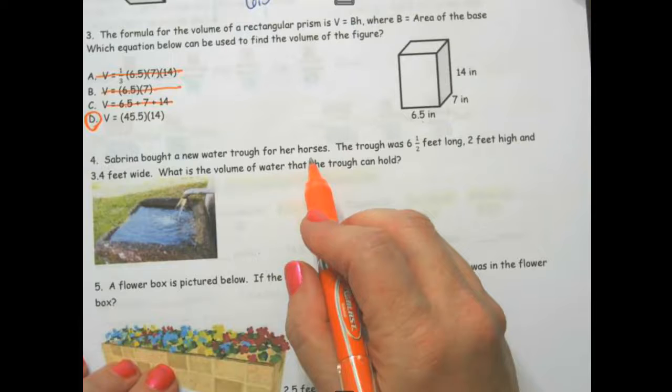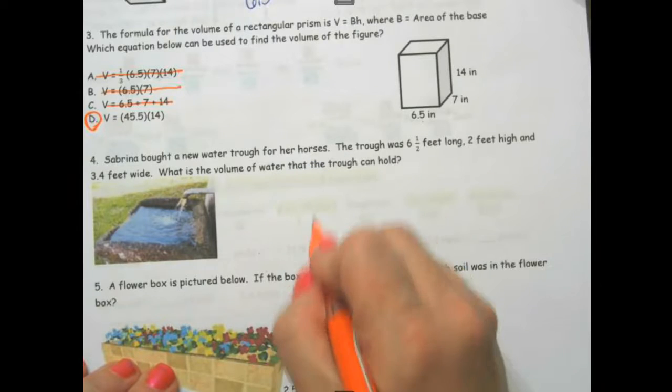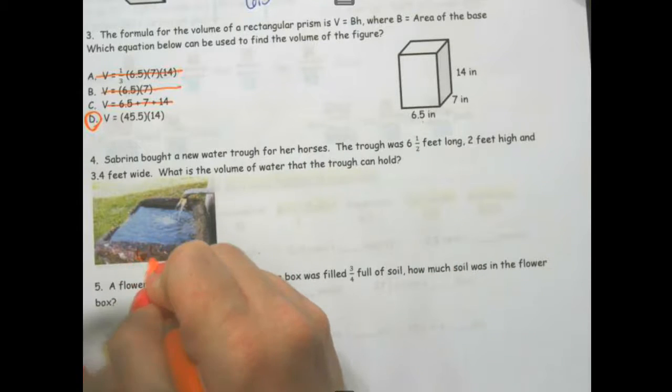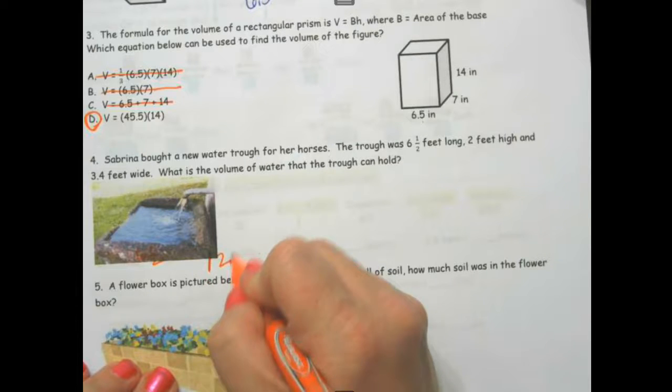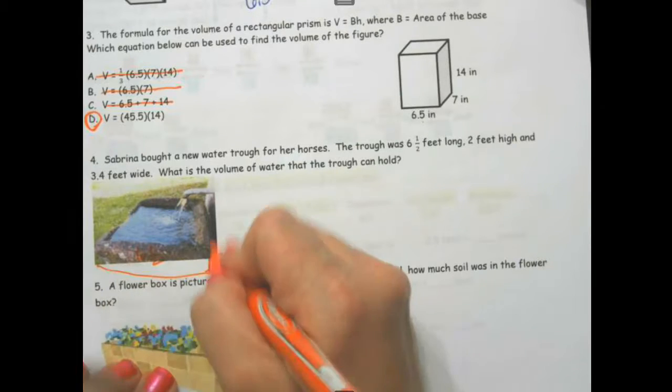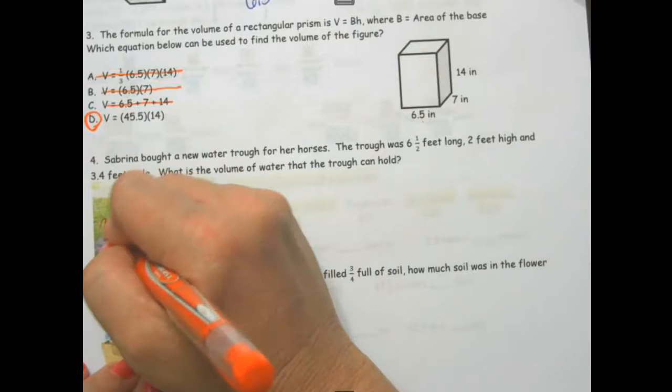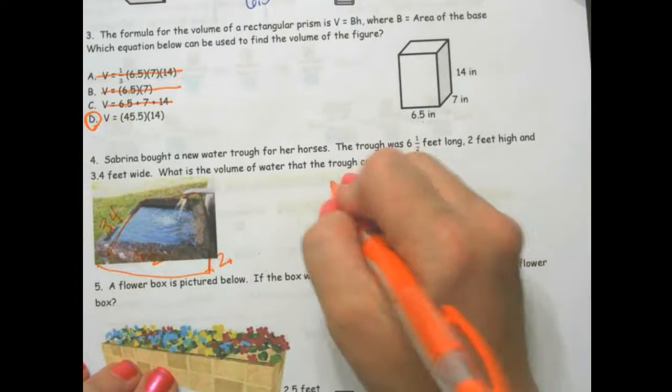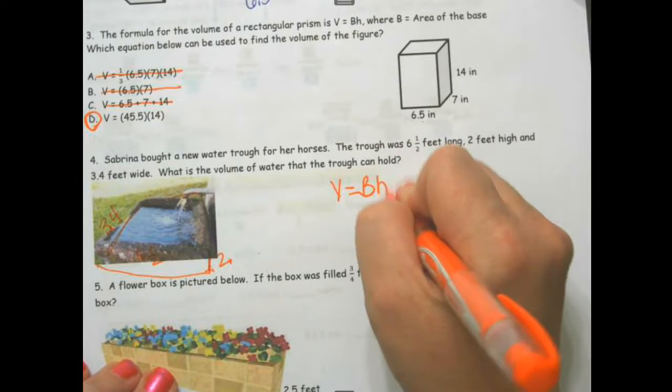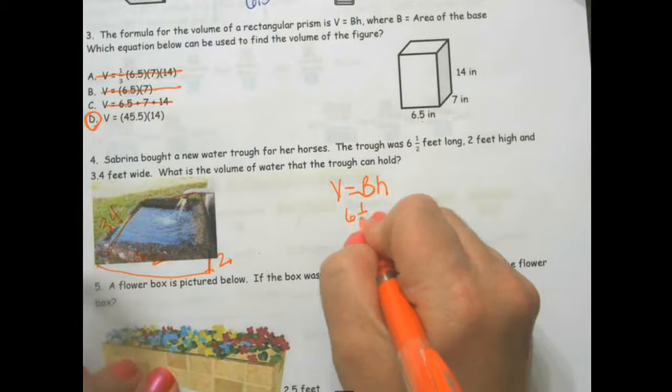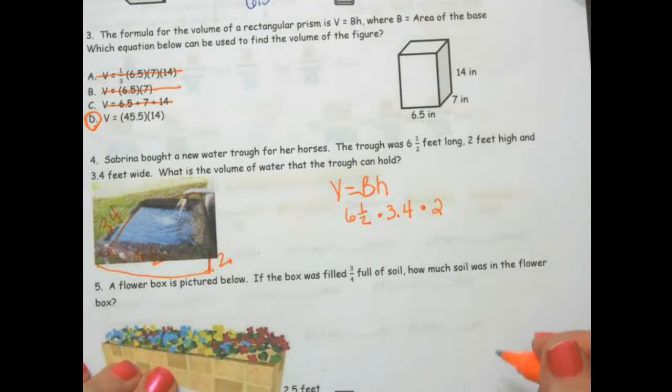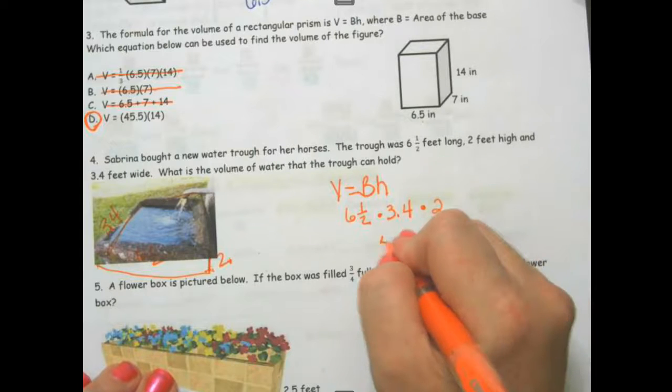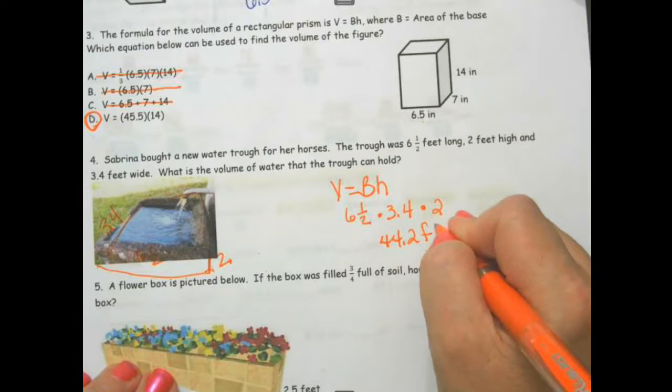Sabrina bought a water trough for her horses. The trough was 6.5 feet long, 2.5 feet high, and 3.4 feet wide. Now, what is the volume? So volume equals big B times H. So 6.5 times 3.4 times 2.5. I want to get 44.2 feet cubed.